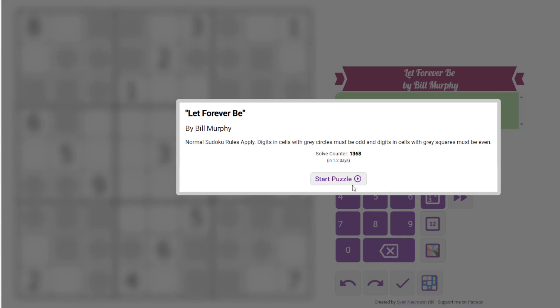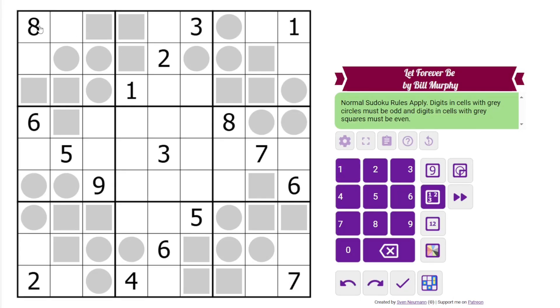This is an odd and even Sudoku. We have normal Sudoku rules, 1 to 9 in each row, column, and 3 by 3 box.